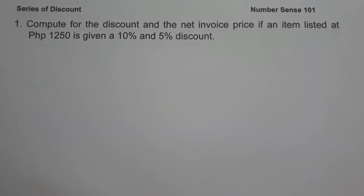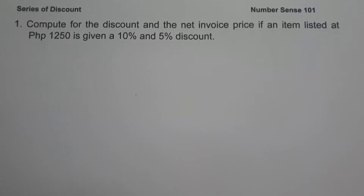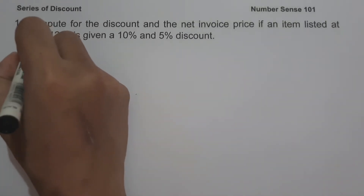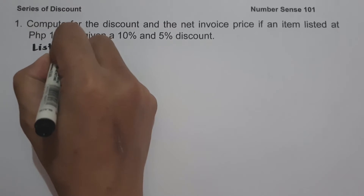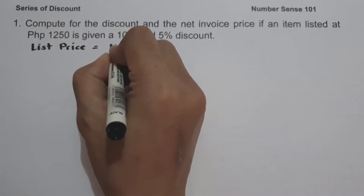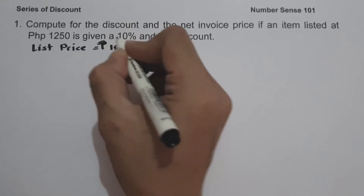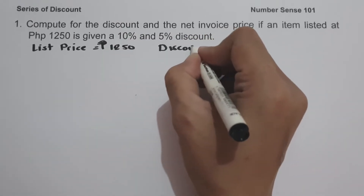For today's video we are going to talk about what is series of discounts and we are going to explain everything in detail. Let's have Example 1: compute for the discount and the net invoice price if an item listed at 1,250 pesos is given a 10% and 5% discount. Let us identify first our given: list price is 1,250 pesos, and discount rates are 10% and 5%.